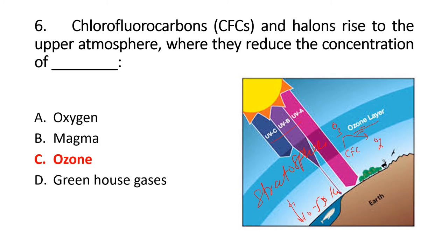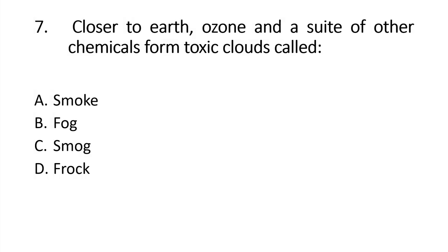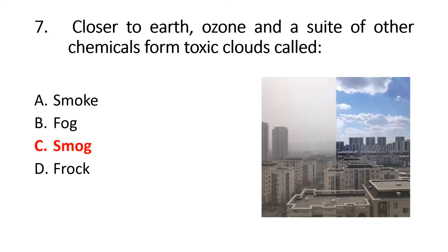Question 7: We also know that nitric oxide and sulfur dioxide will combine to form nitric acid and sulfuric acid, which causes acid rain. Closer to Earth, ozone and a suite of other chemicals form toxic clouds. The answer is smog. Smog is a combination of smoke and fog.